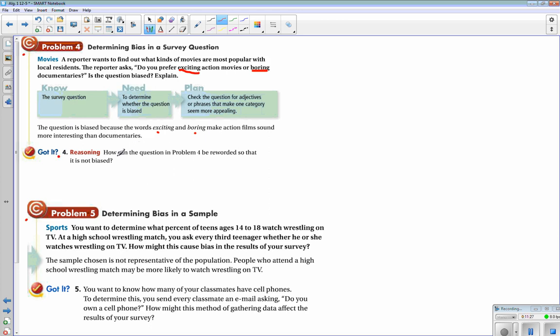So, let's look at this question. How can the question in problem number four be reworded so that it is not biased? And I would say, what if we just took out the adjectives? Do you prefer action movies or documentaries?